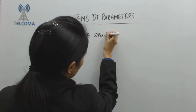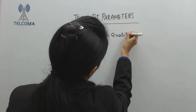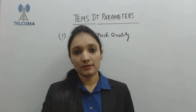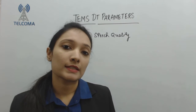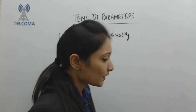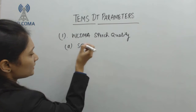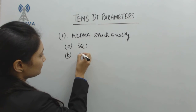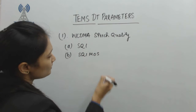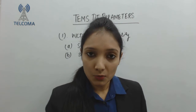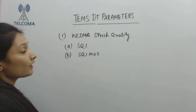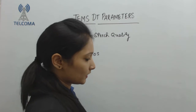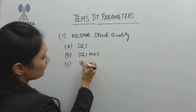First we have the WCDMA speech quality block of parameters. This includes a list of parameters indicating the quality of speech. It includes SQI — speech quality index — which we covered in a previous session, and SQI MOS — speech quality index with mean opinion score. These are voice quality indicator measures which indicate the quality of speech for the downlink.